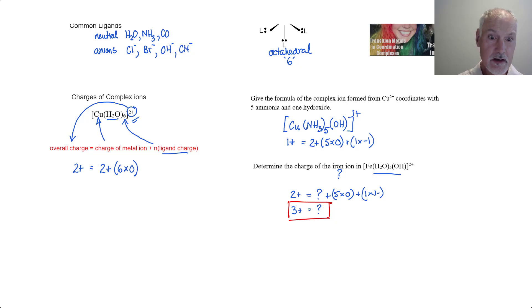So once again, the charge of our complex ion is dependent upon the charge of our central transition metal ion, the charge of our ligand, and how many ligands or what the coordination number is. Thanks for watching.